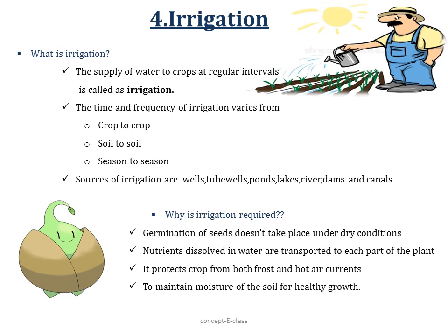The fourth agricultural practice is irrigation. Irrigation is the supply of water to crops at regular intervals. The time and frequency of irrigation varies from crop to crop — the water required for wheat may not be the same as for rice — and it also varies from soil to soil and season to season. Kharif crops require less water as compared to Rabi crops. Sources of irrigation include wells, tube wells, ponds, lakes, rivers, dams, and canals. Irrigation is required because germination of seeds doesn't take place under dry conditions, nutrients dissolved in water are transported to each part of the plant, it protects crops from cold and hot air currents, and it maintains the moisture of the soil.